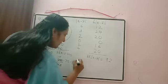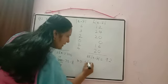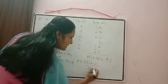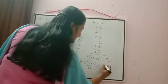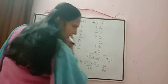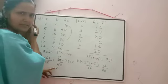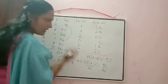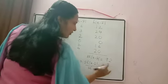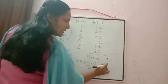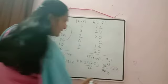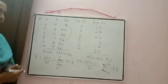Mean deviation = Σfᵢ|xᵢ − x̄| / Σfᵢ = 92/40. Cancel by 4: 92/4=23, 40/4=10. So MD = 23/10 = 2.3. This is the mean deviation.